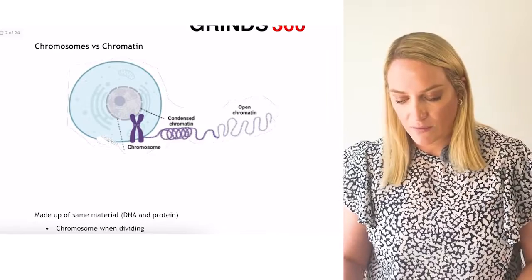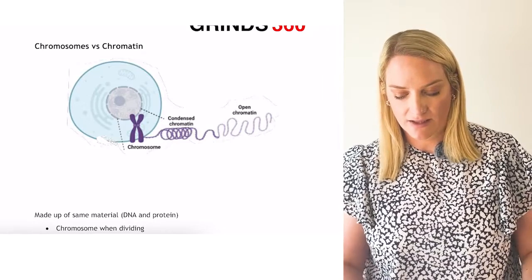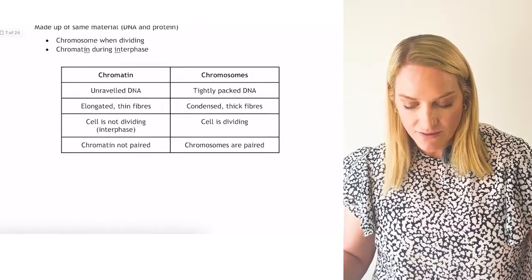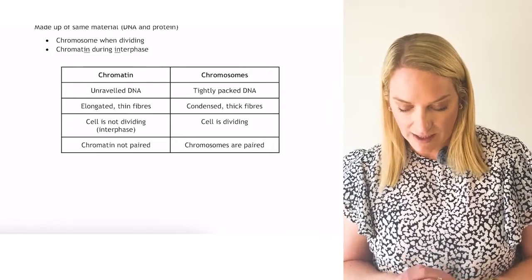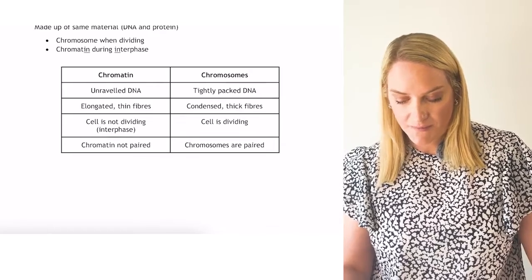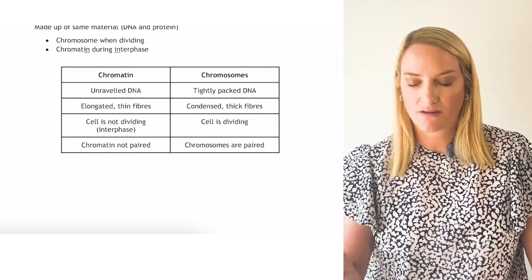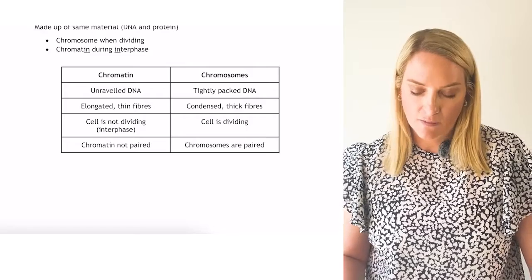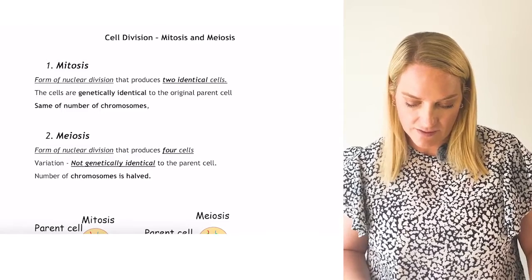Chromatin is unraveled DNA — long, elongated, thin fibers present in the nucleus when the cell is not dividing during interphase. Chromosomes are tightly packed, thick fibers that become visible when the cell is dividing during mitosis or meiosis. Chromatin is not paired; chromosomes are paired. We'll now look at cell division — mitosis and meiosis.